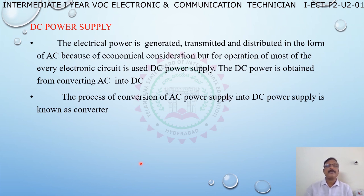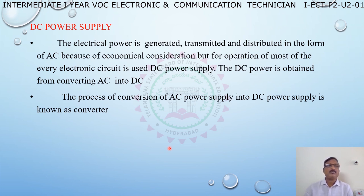The process of conversion of AC power supply into DC power supply is known as a converter, or simply a rectifier. Electronic appliances such as TV, computer, and radio use direct current. So when we use electronic appliances, we convert AC to DC through rectification.